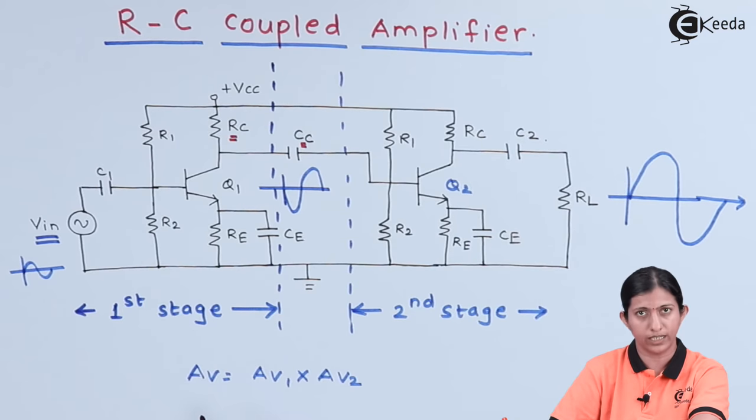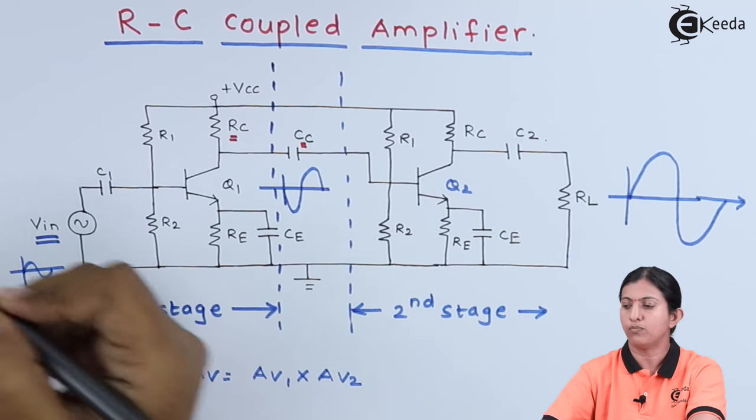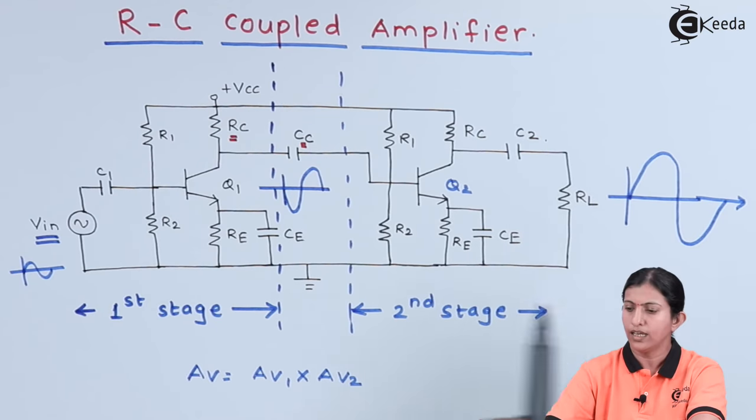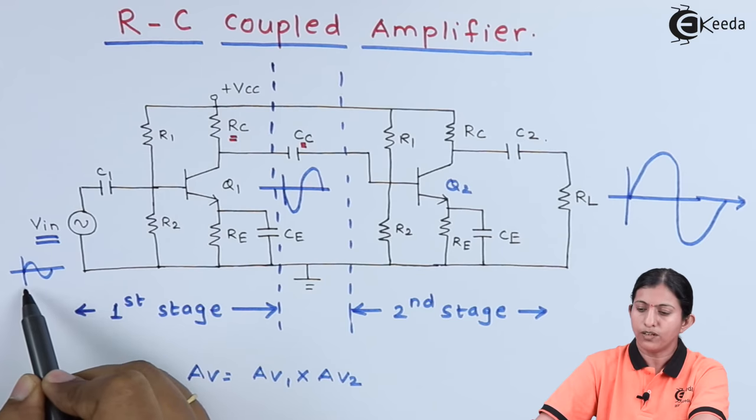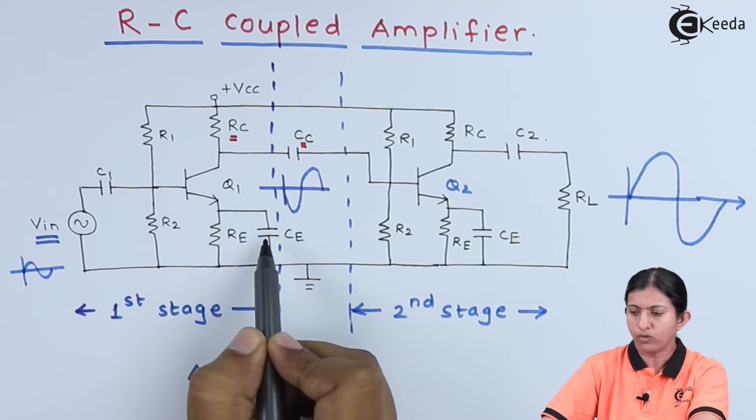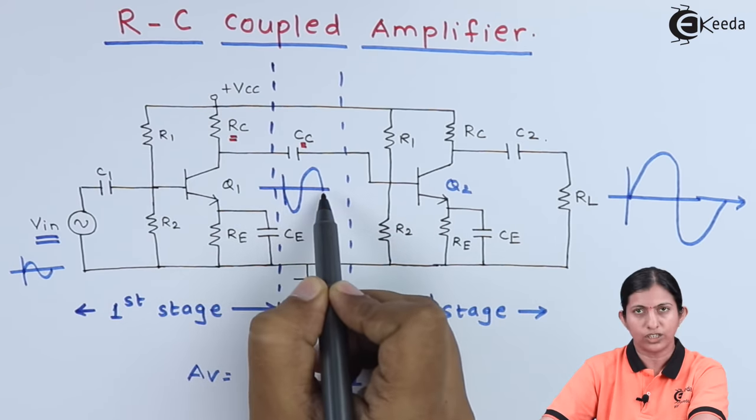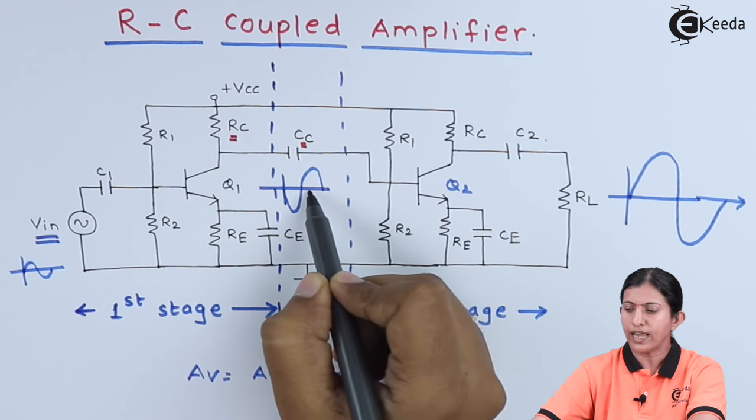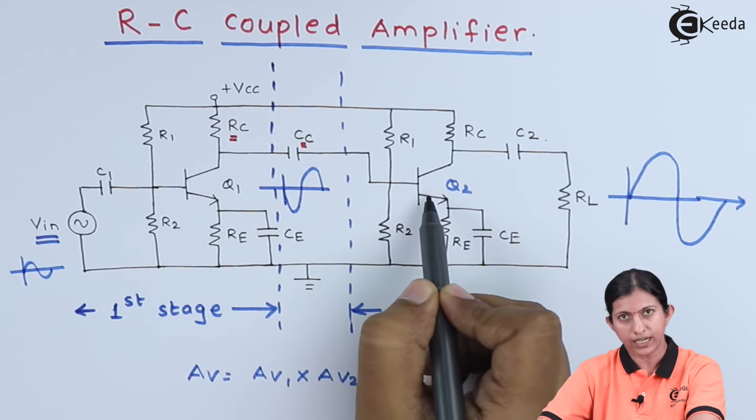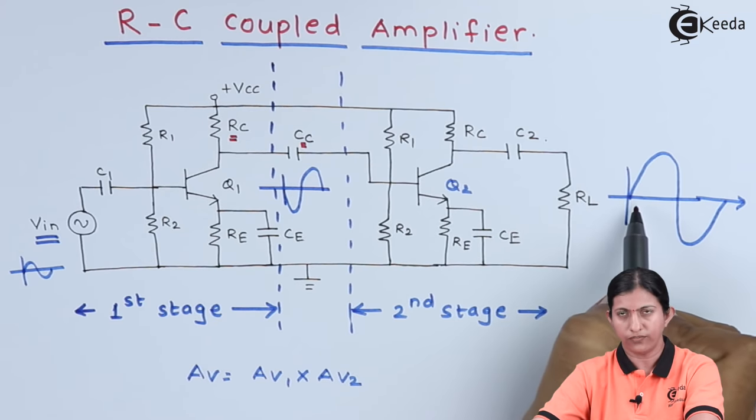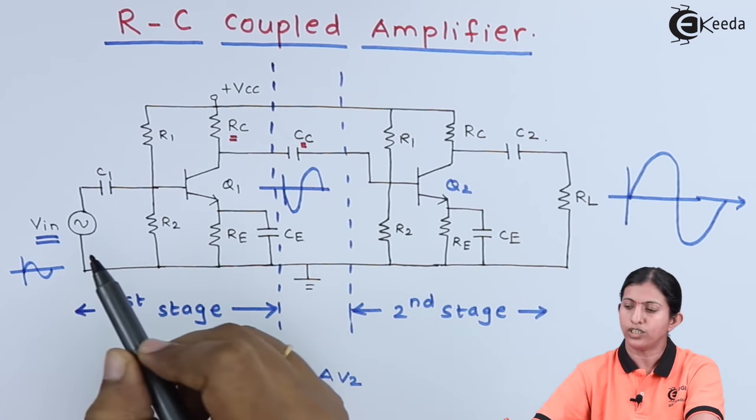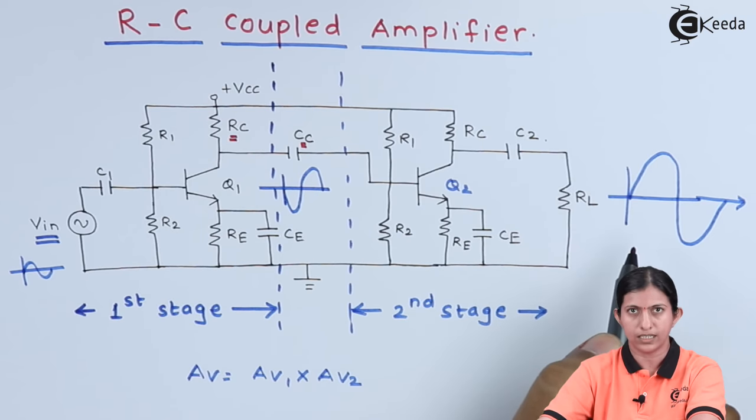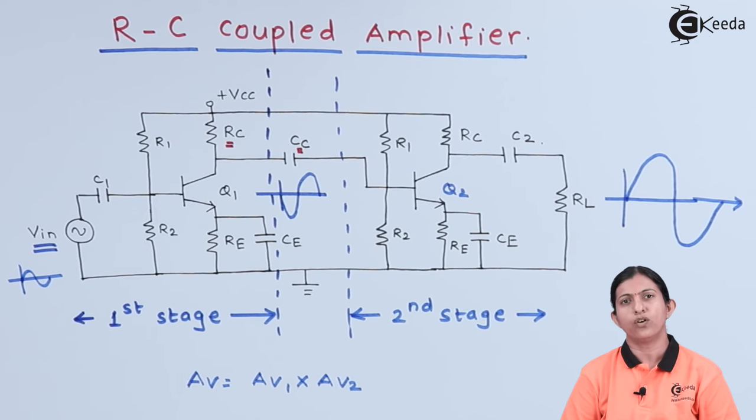The overall voltage gain of this RC coupled amplifier is AV equals AV1 times AV2. When we see the phase shift between the input signal and output signal, from the first stage we get 180 degree phase shift. When that signal is applied to the second stage, we get another 180 degree phase shift. So the total phase shift between input and output is 360 degrees.